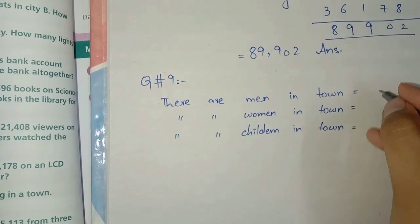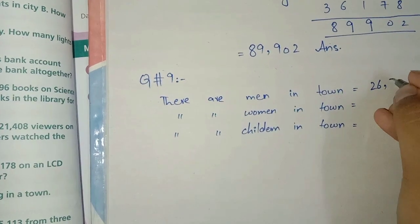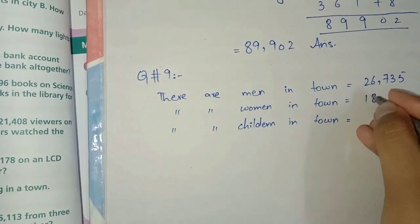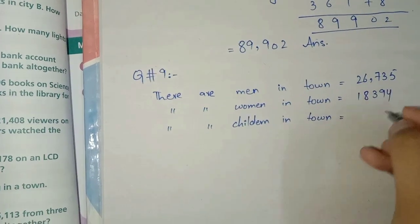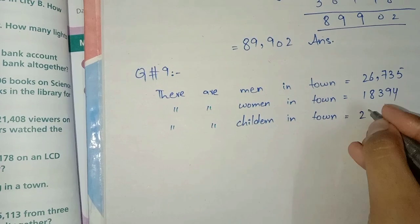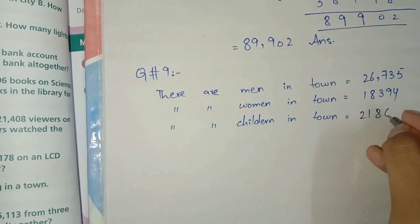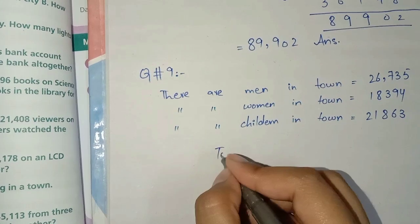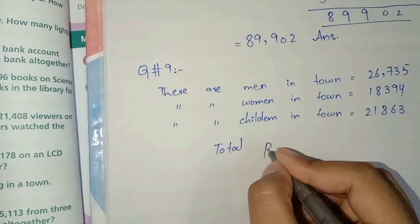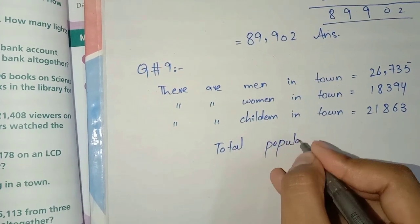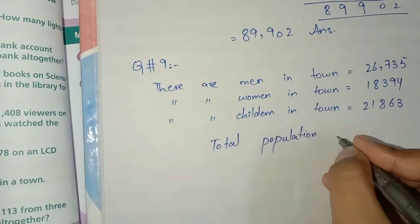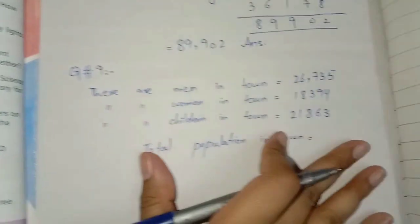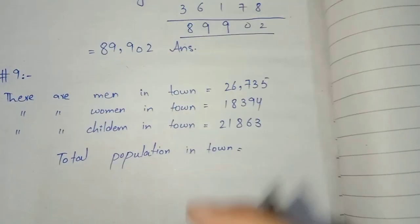Men kitne the hamare paas: 26,735. Women hain hamare paas: 18,394. Aur children hain hamare paas: 21,863. Ab hamne total population batani hai kitni hai. Ab hum in sab ko add karenge.